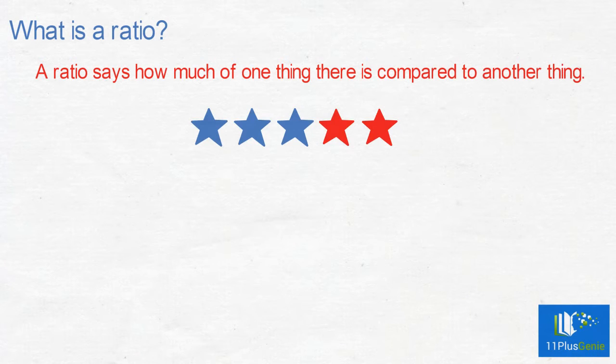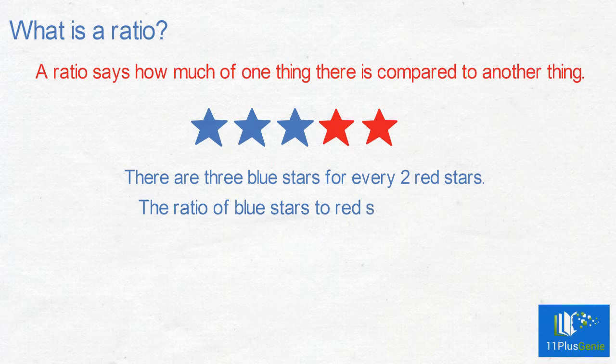In the diagram, there are three blue stars for every two red stars. The ratio of blue stars to red stars is 3 to 2.